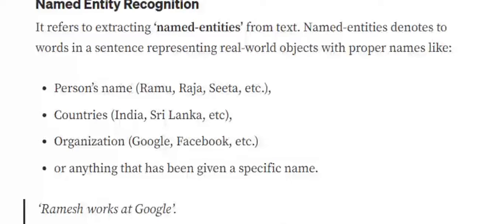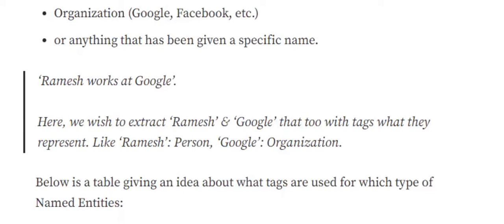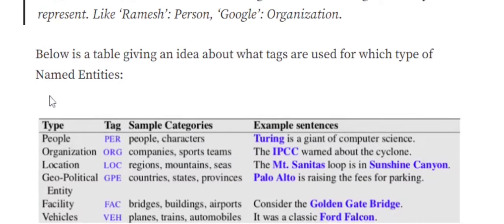When we say named entities, we wish to pick out proper nouns — the name of a person, name of a country, name of some organization, or anything that can be given a specific name. For example, 'Ramesh works at Google' has two entities: Ramesh (a person) and Google (an organization). We can assign tags like PER for person, ORG for organization, LOC for location, GPE for geopolitical entity, etc.